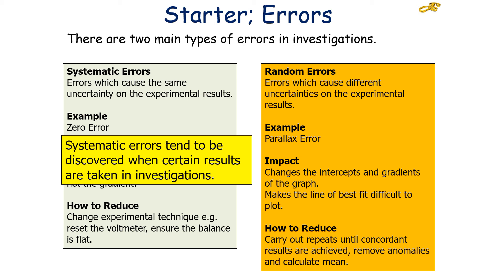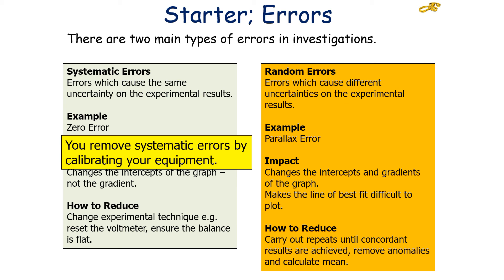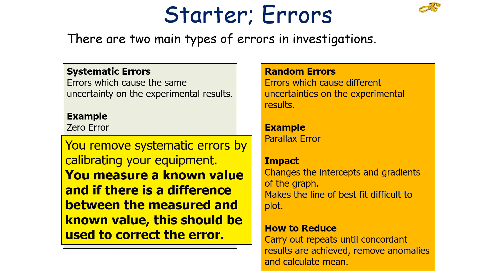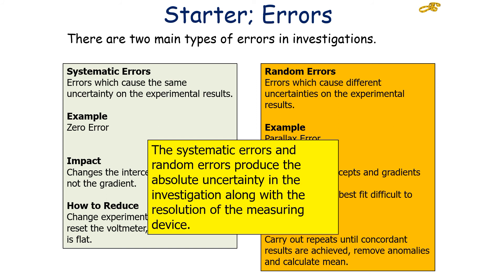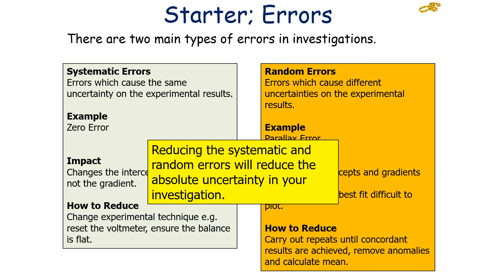Systematic errors tend to be discovered when certain results are taken in investigations. You remove systematic errors by calibrating your equipment — measuring a known value and, if there's a difference between the measured value and the known value, using that difference to correct the error. The impact of random and systematic errors is a very common examination question on Physics Paper 3. Together, systematic and random errors — along with the resolution of the measuring device — produce the absolute uncertainty in an investigation, and reducing them will reduce that absolute uncertainty.